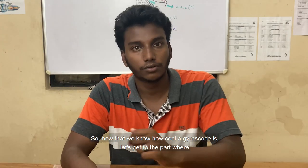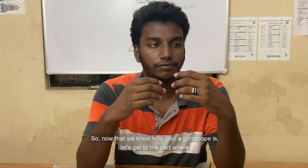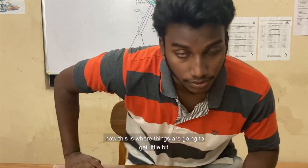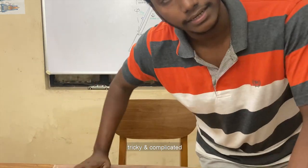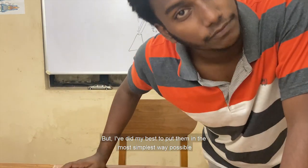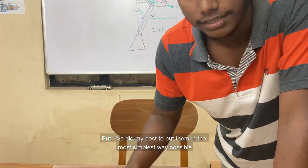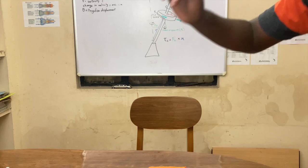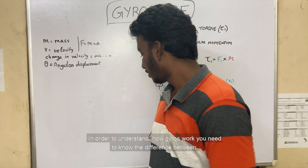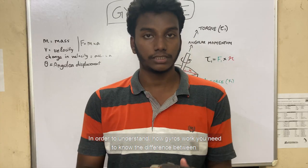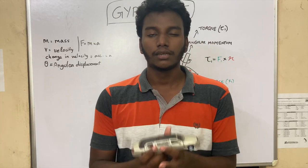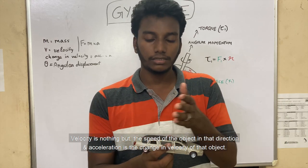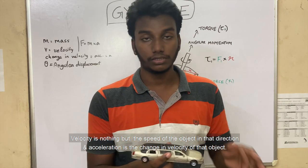Now that we know how cool a gyroscope is, let's look at how it actually works. Things are going to get a little tricky and complicated, but I've done my best to put it in the simplest way possible. To understand how gyros work, we need to know the difference between acceleration and velocity. Velocity is the speed of an object in a direction, and acceleration is the change in the velocity of the object.